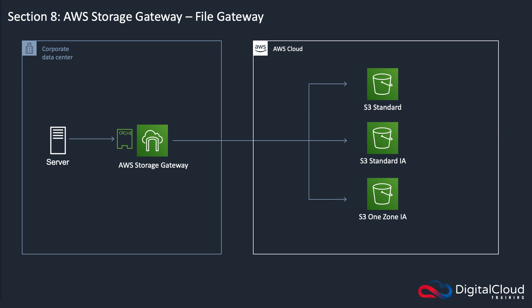The first type is File Gateway. With File Gateway, the Storage Gateway is actually a virtual appliance running on VMware or Hyper-V within the corporate data center, so an on-premises environment. Your servers, application servers, or clients on-premise connect to the Storage Gateway using either the Network File System protocol (NFS) or the Server Message Block protocol (SMB) — one of those two file-level protocols.